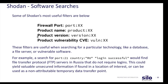The next advanced searching method we'll cover is software searches. There are some example filters to find software — these filters are useful when searching for particular technologies such as a database, a file server, or even vulnerable software. The example shown would find FTP servers in Russia that don't require logins. We're going to take this example over to Shodan and see what results we can find.